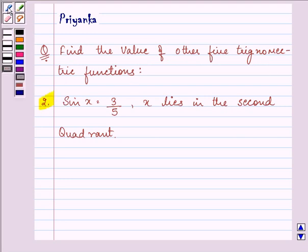Now here the value which is given to us is sin x equals 3 by 5 and x lies in the second quadrant. So let us start with our solution.